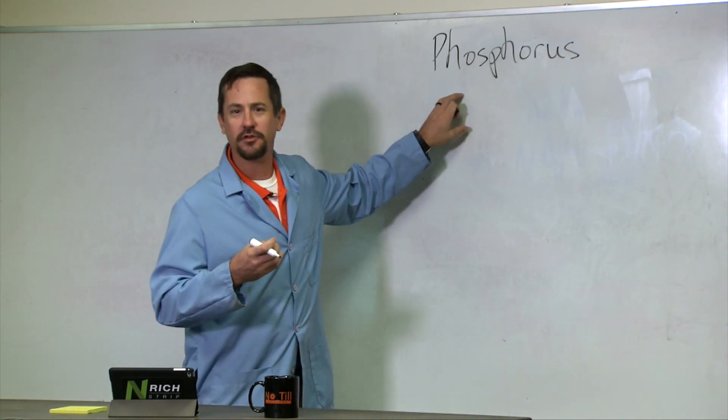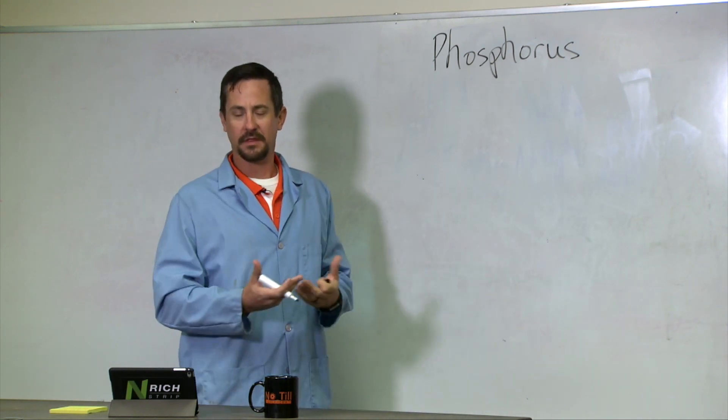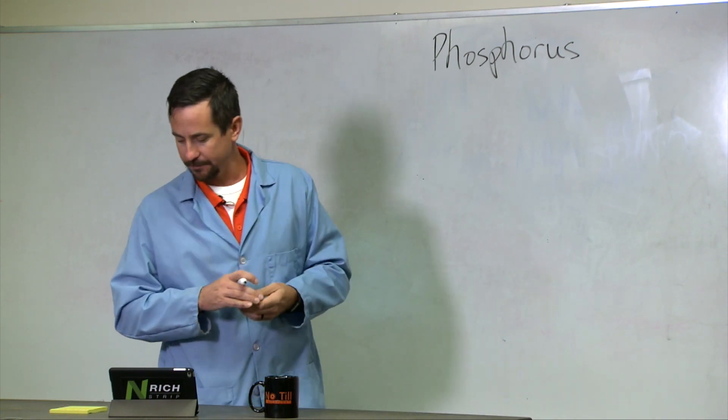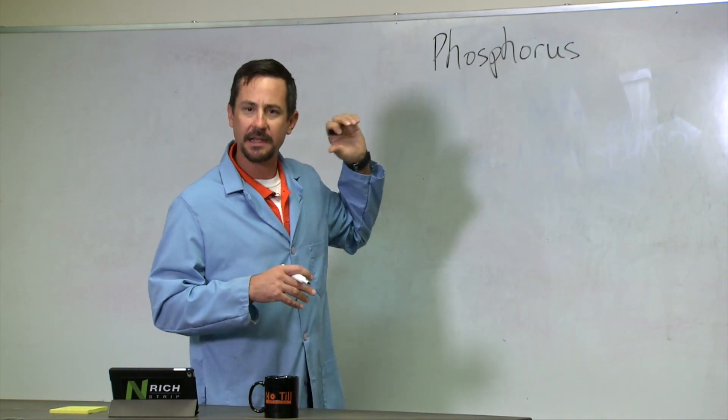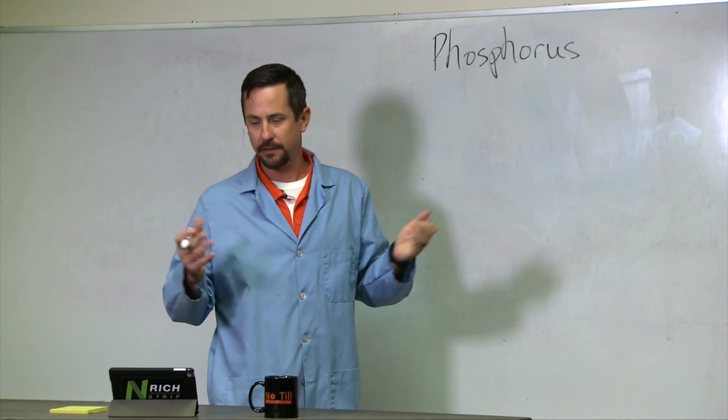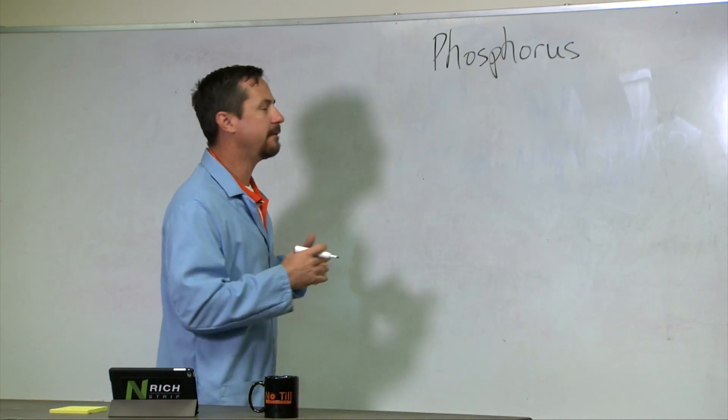It's the thing that provides energy and allows the plant to have energy. Now, unlike nitrogen, which has a mobile form (nitrate), phosphorus exists in forms that are very immobile in the soil.